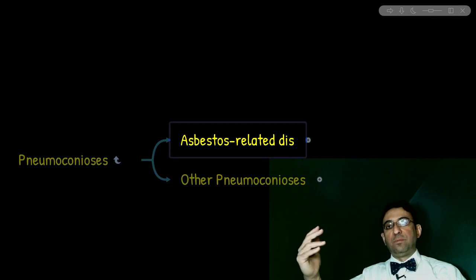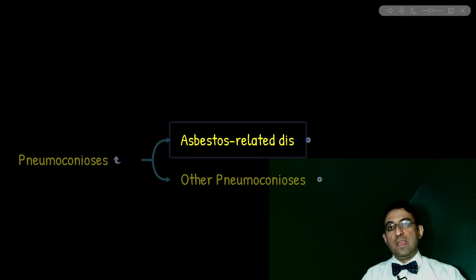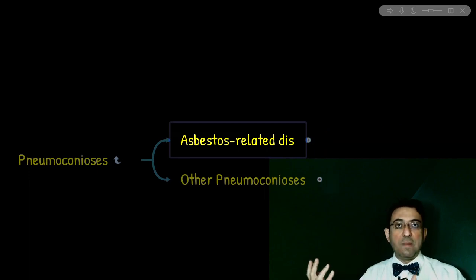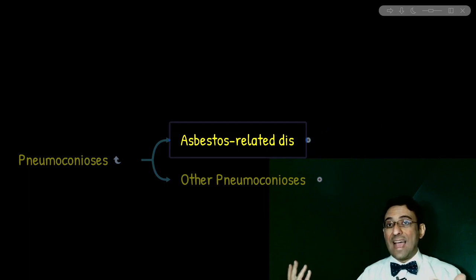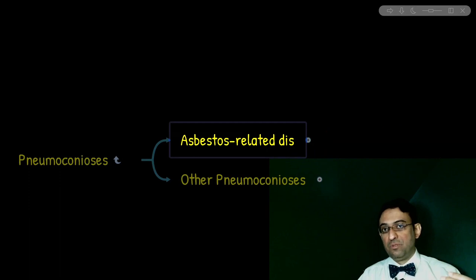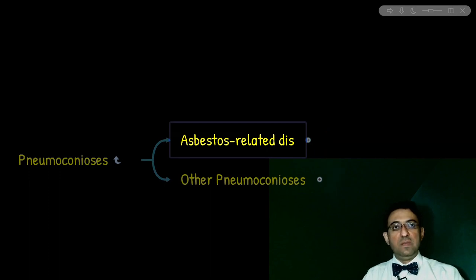What are the asbestos related disorders? We have several conditions. Most of them manifest 15 to 20 years after environmental exposure to asbestos. The first one is just presence of pleural plaque. If there is nothing else, that fibrous pleural plaque is one manifestation of asbestos related disease. It's not called asbestosis if we do not have evidence of lung fibrosis. The pleural plaque itself could also be associated with pleural effusion, or pleural effusion alone could be the initial manifestation.